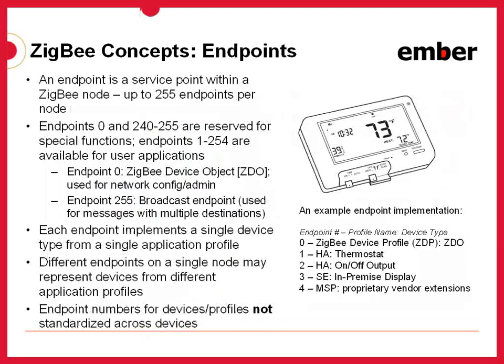How do we associate different application profiles with a device? The answer is we have these things called endpoints. Endpoints are service points on a node. There can be, in theory, up to 255 of these defined. However, there's also an endpoint 0 which is built in by the stack, and endpoints 240 through 255 are reserved for special future functions — so that effectively leaves 240 endpoints that the user could implement.